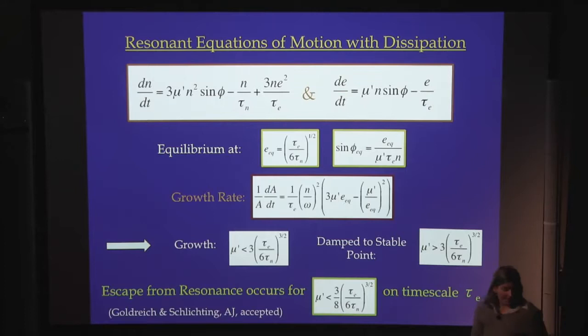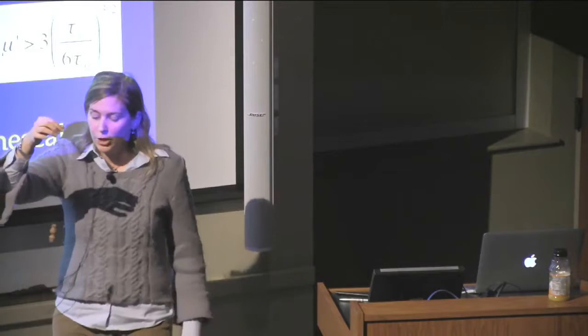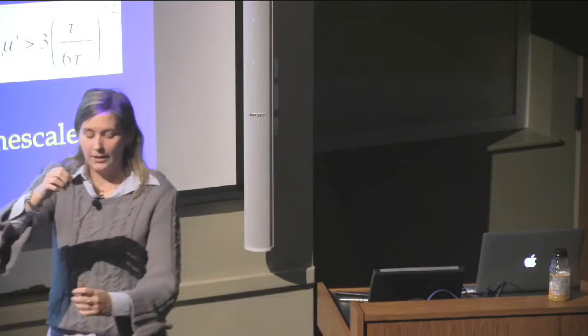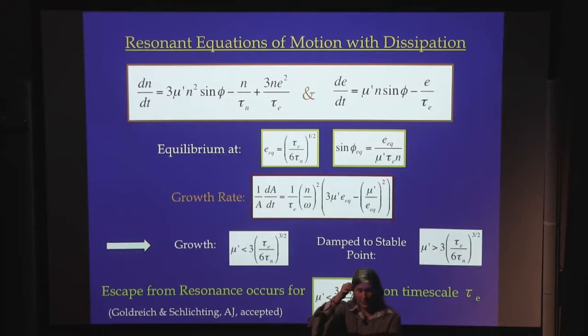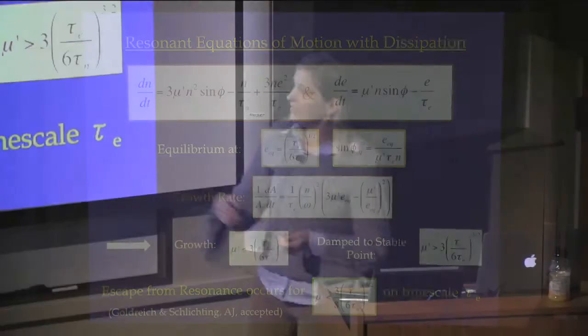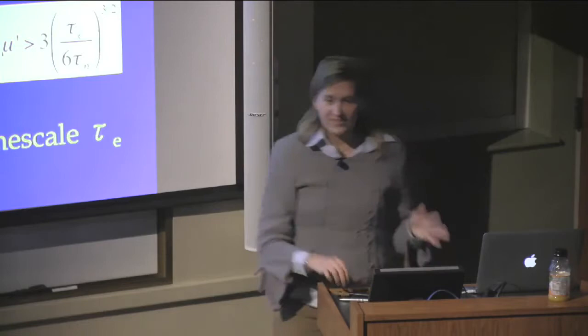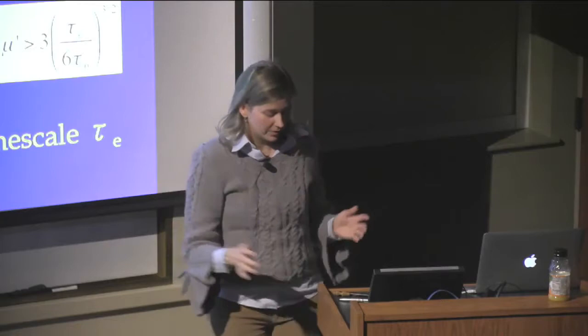Furthermore, you can show that this equilibrium can actually be overstable. If you perturb the system slightly from equilibrium, you can get growth because it's overstable. Overstable means that if you perturb something away from equilibrium, the force bringing it back brings it back at a velocity larger than it had going out — instead of being damped back to equilibrium, what results is growing vibrations until the system becomes chaotic and escapes the resonance. Whether or not these overstable vibrations exist only depends on how massive your planet is compared to this ratio of damping timescales.